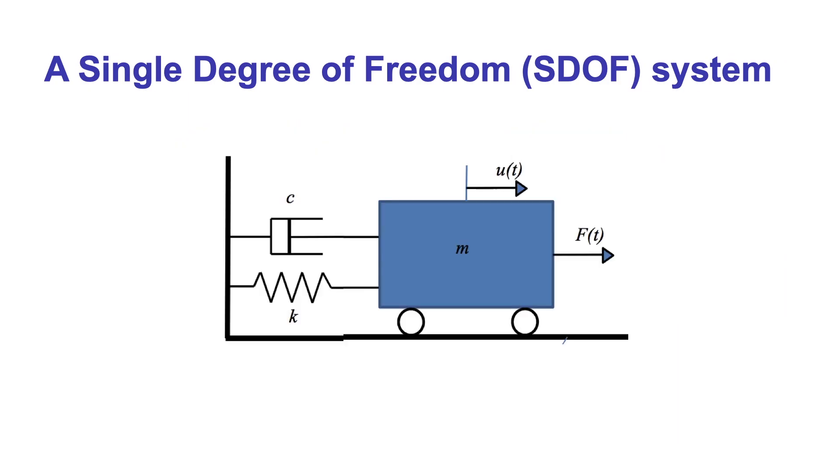This figure shows a single degree of freedom system comprising a mass m, subjected to a time-varying external force F(t), and attached to a spring of stiffness k and a viscous damper with a damping coefficient c. The external time-varying force F(t) causes a displacement that also changes in time that we are calling U(t).